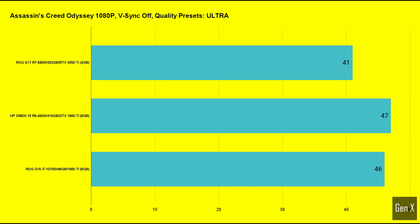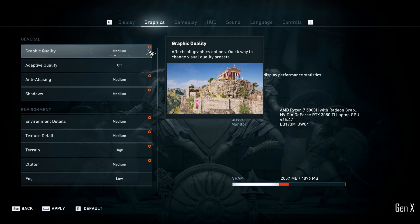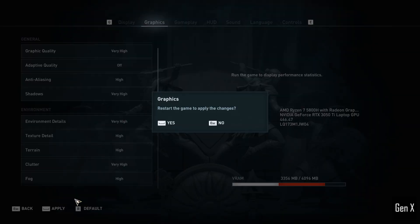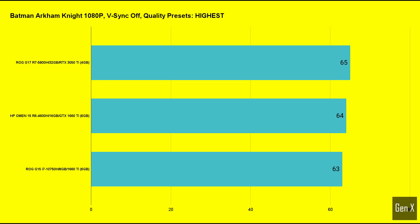Assassin's Creed Odyssey was tested with the game's built-in benchmark software. At 1080p Ultra settings, the newer RTX 3050 Ti system scored 41 frames per second, compared to 47 frames per second for the HP Omen and 46 frames per second for the ROG G15. Assassin's Creed does not use more than 4 gigabytes of video RAM, which some people thought would be a potential bottleneck. Batman Arkham Knight is an older title from 2015. With the built-in PC performance benchmark, the 3050 Ti scored an average of 65 FPS — just 1 frame per second more than the HP and 2 frames per second more than the Asus laptop.